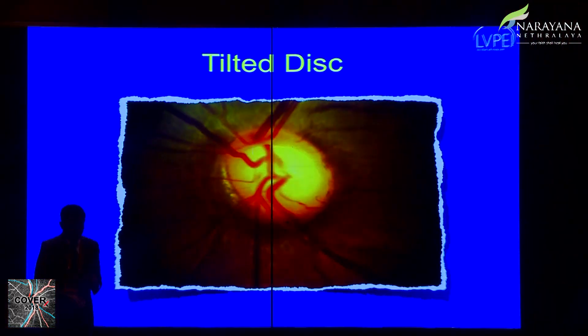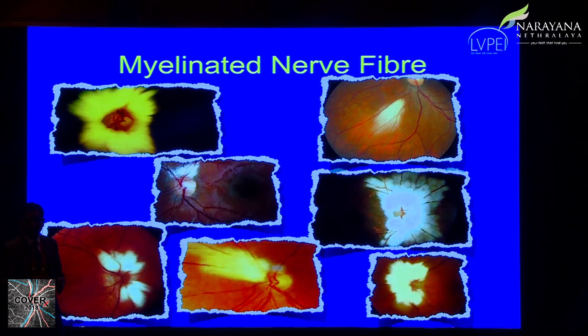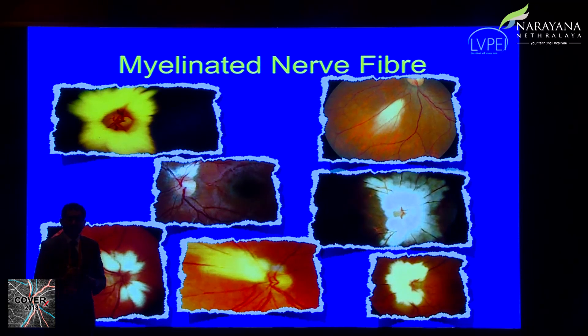Optic disc pit is usually unilateral, though bilateral cases and multiple pits in one eye can occur. Most patients have normal visual acuity unless there is subretinal fluid leading to complications. Pits are most often associated with oblique astigmatism and can cause visual field defects. Myelinated nerve fiber layers are one of the more common congenital disc anomalies, typically associated with myopia and amblyopia — treatment focuses on refractive error correction and patching.